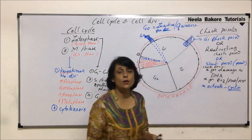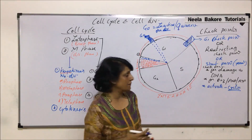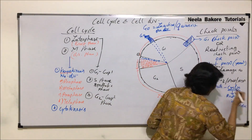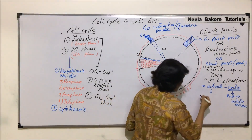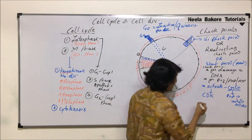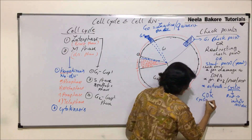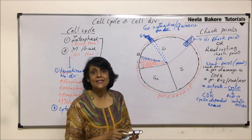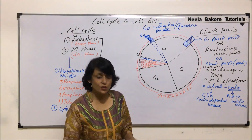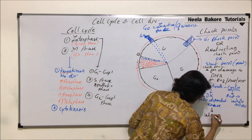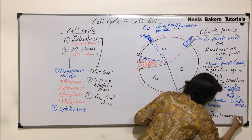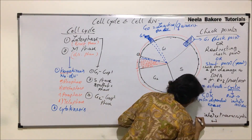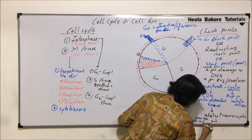Cyclins are a group of proteins that initiate cell division. The G1 checkpoint activates cyclin-dependent kinase, abbreviated as CDK. This cyclin-dependent kinase is responsible for initiation of transcription, which ensures that the cell will now enter S phase. So activation of CDK indicates that the cell can enter S phase.